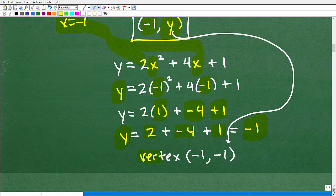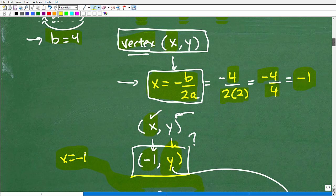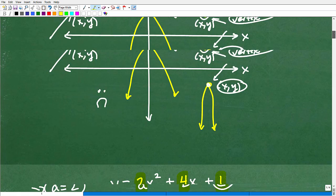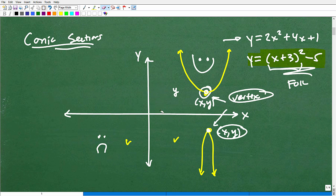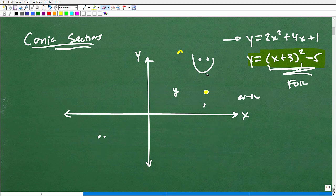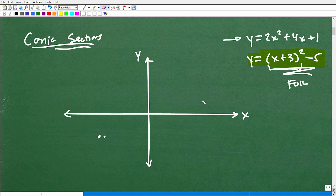So our vertex is at negative 1, negative 1. Meaning, let's go back up here. So I'll kind of throw in a little bonus here as well. So because we found a vertex, it's at negative 1, negative 1. So this would be negative 1 on the x-axis, negative 1, negative 1, and negative 1 right there. So that's going to be our vertex.